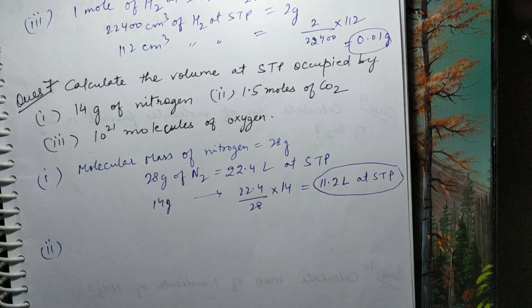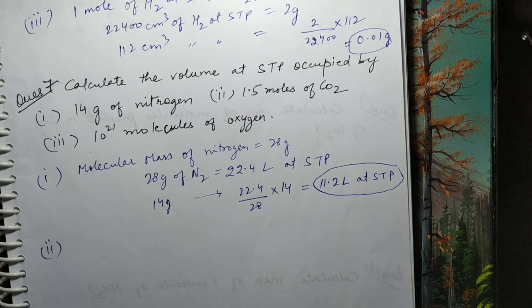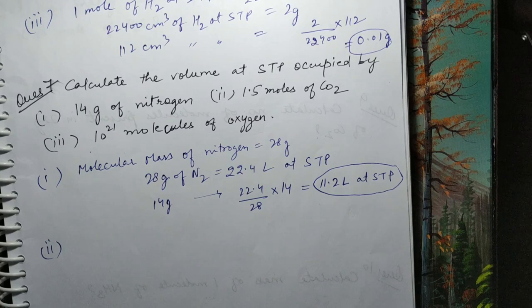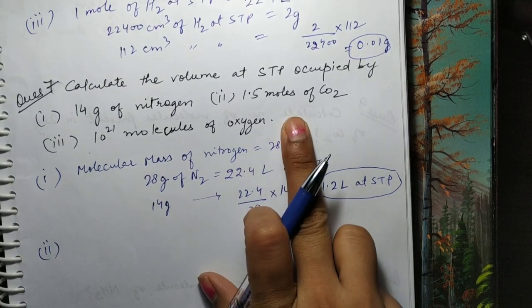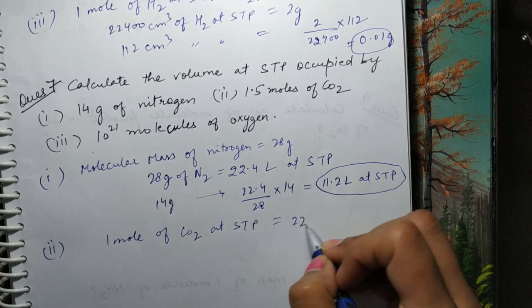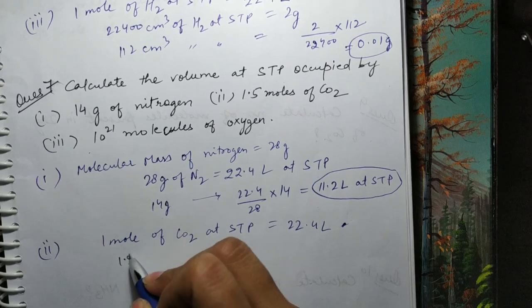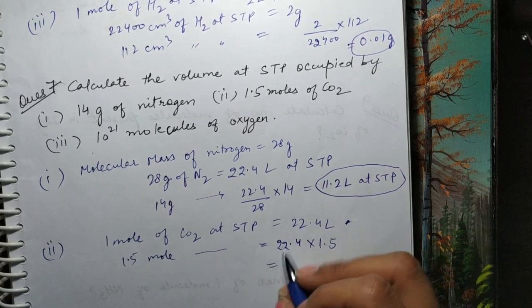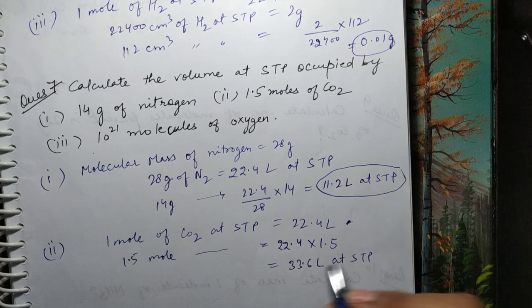Yeh questions baar baar repeat karke practice karwa rahi hoon taaki mole concept aapko bahut achhe se clear ho jaye — otherwise students ko doubt rehta hai atoms mein, molecules mein, kab kaun sa formula lagana hai, kab kaunsa relation use karna hai. Next part: 1.5 mole of CO₂. 1 mole of CO₂ at STP = 22.4 liter, to 1.5 moles = 22.4 × 1.5 = 33.6 liter at STP.